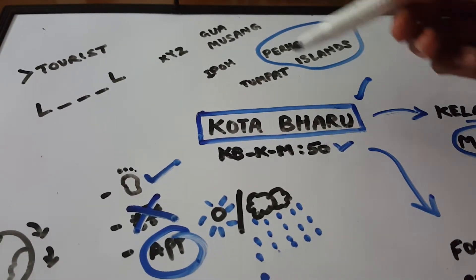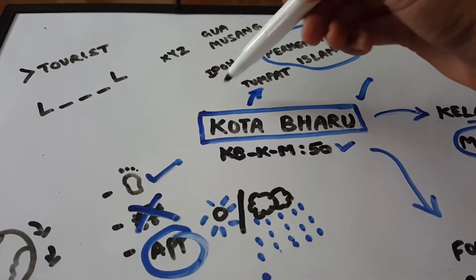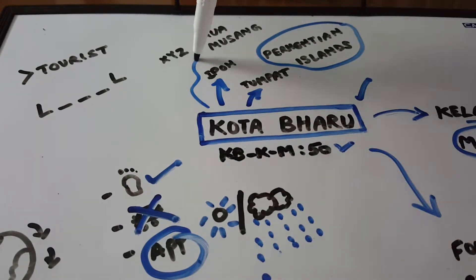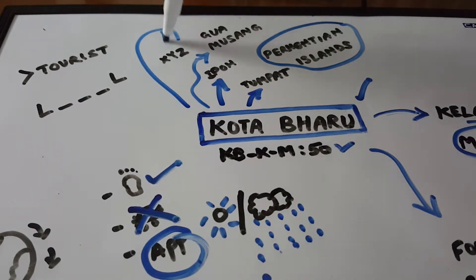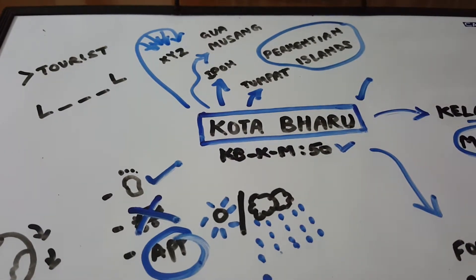Now, what are the other weekend getaways? You can go to Tumpat, which is right at the border. You can go to Ippu which is about a four to five hour drive. You could also go camping and caving to Guamusang or many other places for waterfalls, hikes and much more.